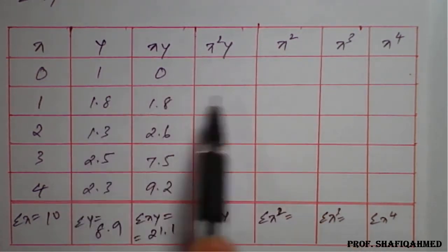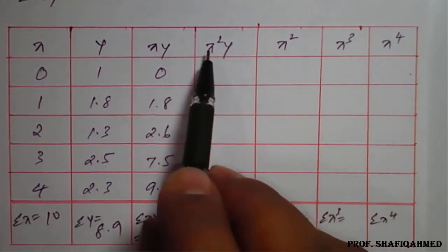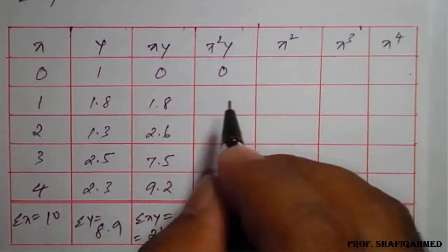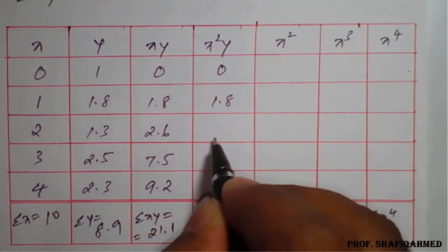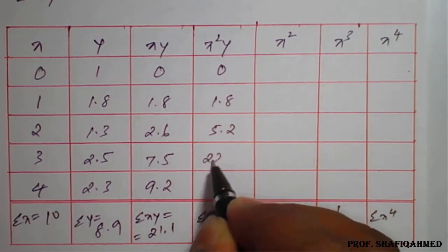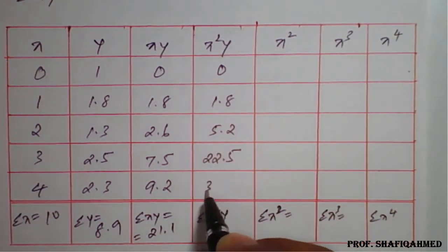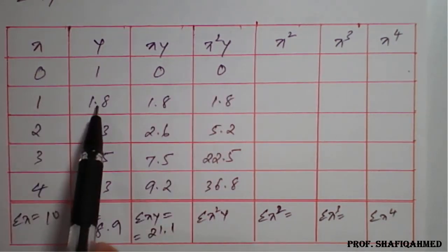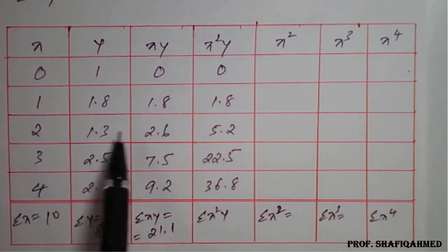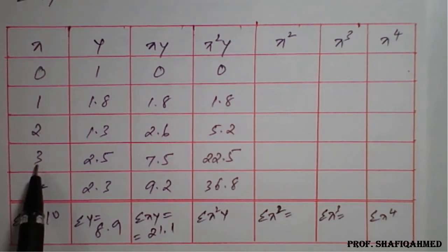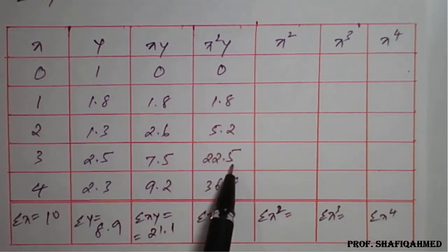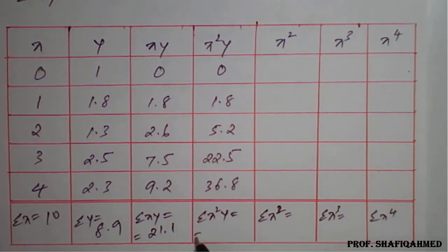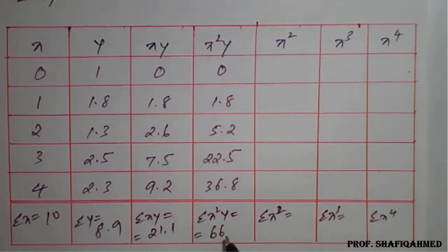Similarly, we need to work out x²y. Square the x value then multiply by y — use a calculator. The values are: 0, 1²×1.8=1.8, 2²×1.3=4×1.3=5.2, 3²×2.5=9×2.5=22.5, 4²×2.3=16×2.3=36.8. So summation(x²y) = 66.3.